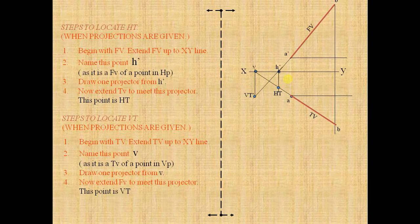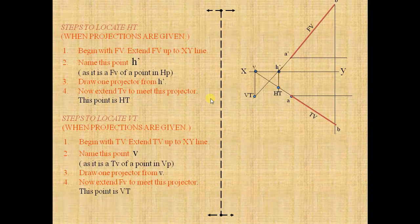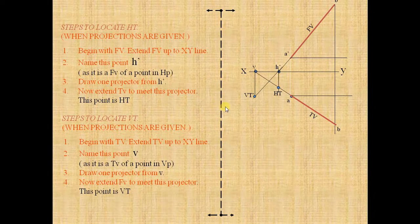And now join this V to meet the V line and name it as VT. So that we can get this vertical trace and horizontal trace of the line of projection.